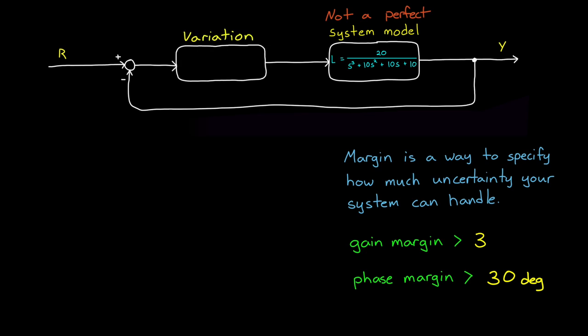We can assess how much margin our closed-loop system has by adding some variation in line with L. And the amount of variation that it takes for the closed-loop system to go unstable is how much margin we have in that direction. And for this discussion, we're going to vary a combination of both gain and phase. And we're going to do that by multiplying the plant by a value f. The multiplier f is just a single complex number, so it has a real and imaginary component.